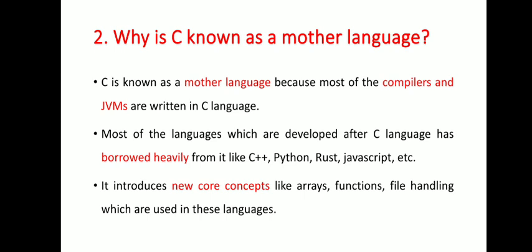Next question: why is C known as mother language? C is known as a mother language because most of the compilers and JVMs are written in C language. Most of the languages developed after C have borrowed heavily from it, like C++, Python, Rust, JavaScript, etc.